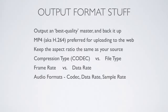The preferred compression format is MP4, also known as H.264. That can look different because it could be a .mov file or a .mp4 file — we'll talk about that. If you have the option of changing the aspect ratio in a dialog box, make sure you keep it the same as your source material — probably 16x9 — otherwise your footage will look squished or stretched on YouTube.